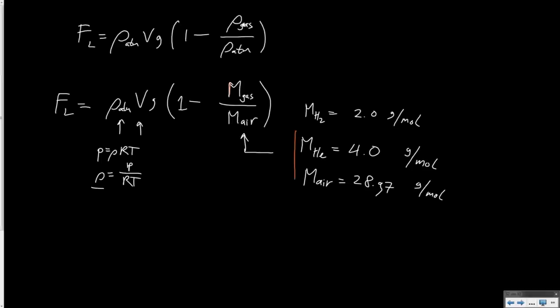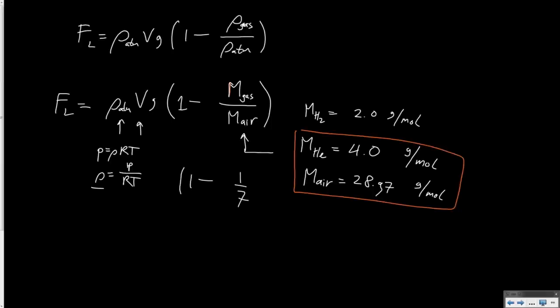We see that helium's molar mass ratio to air becomes around 4/28.97, which is approximately 1/7. What happens then is that 1 minus 1/7 becomes 6/7. So the lift of a helium balloon is rho_atmosphere times V times g times 6/7 — or 6/7 of the weight of the air you replace as lift force. This is a lot: it is 6/7 of the way to vacuum lift, which is the theoretical maximum.